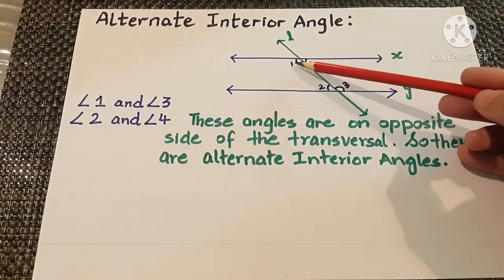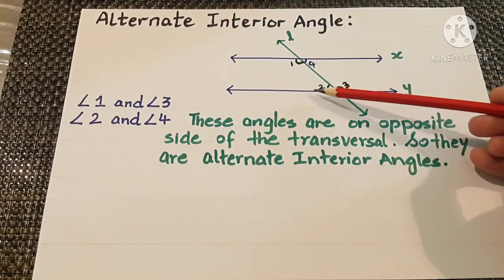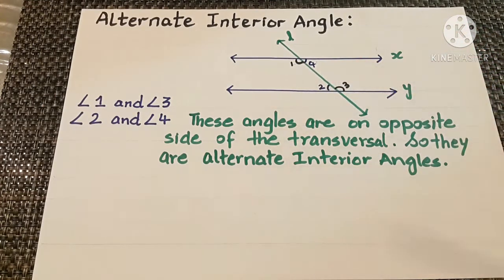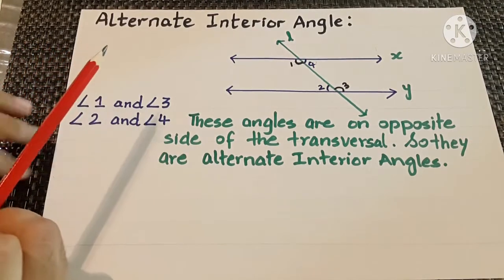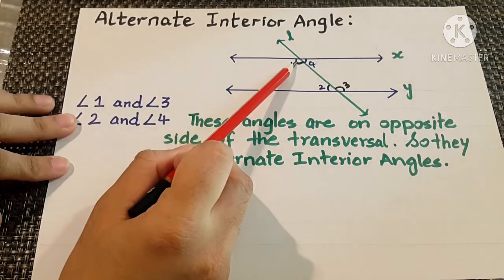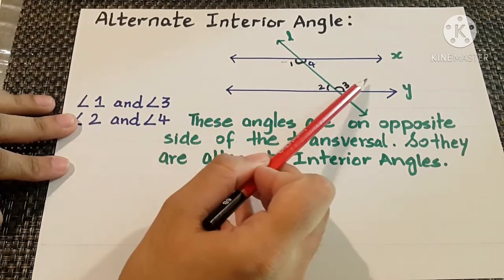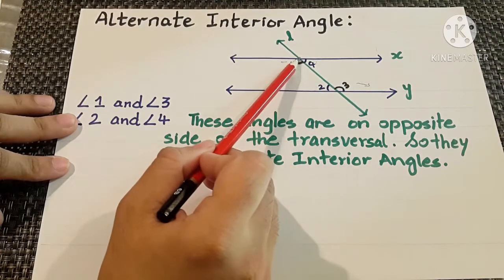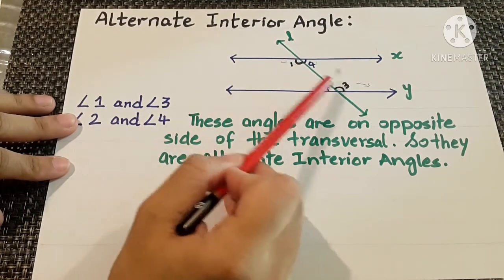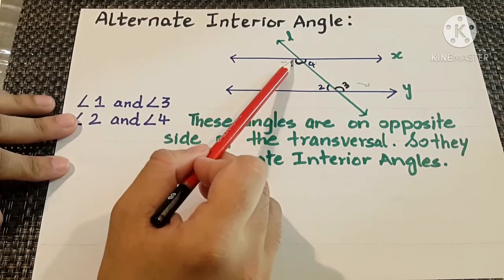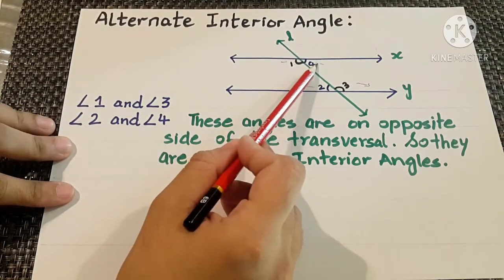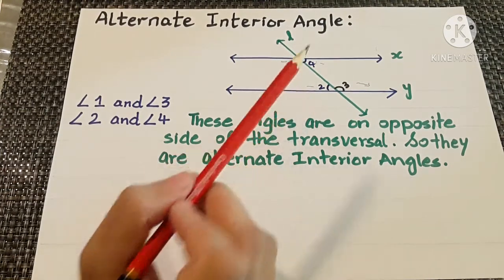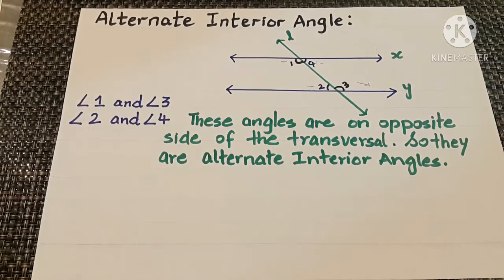So the pairs angle 1 and angle 3, and angle 4 and angle 2 are known as the alternate interior angles. These angles are on opposite sides of the transversal — angle 1 is on one side whereas angle 3 is on the other side, but they are interior angles, making them alternate interior angles. Similarly, angle 4 and angle 2 are also alternate interior angles. I hope you have understood the concepts of interior angles, alternate interior angles, corresponding angles, and vertically opposite angles.